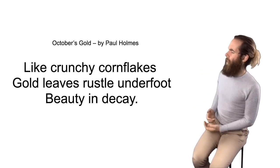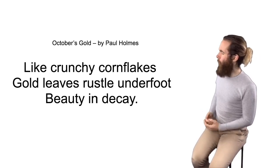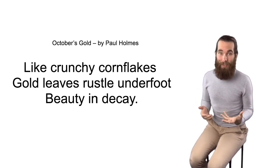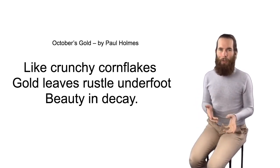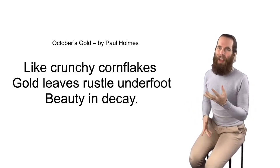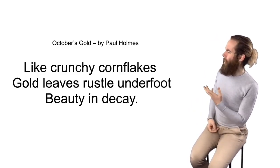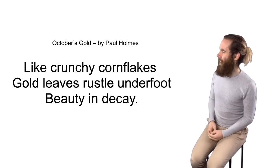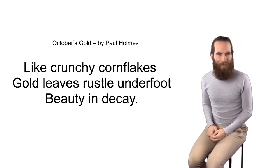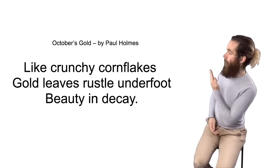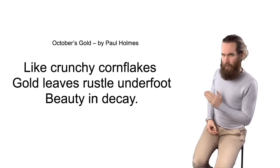Now let's look at a haiku. This is 'October's Gold' by Paul Holmes and it thinks about autumn. It's written by somebody in the northern hemisphere where their autumn is the same as their spring. You could imagine this being called 'April's Gold' if it was written from a southern hemisphere perspective. Let's read it: 'Like crunchy cornflakes, gold leaves rustle underfoot, beauty in decay.' So we've got five, seven, and five again.